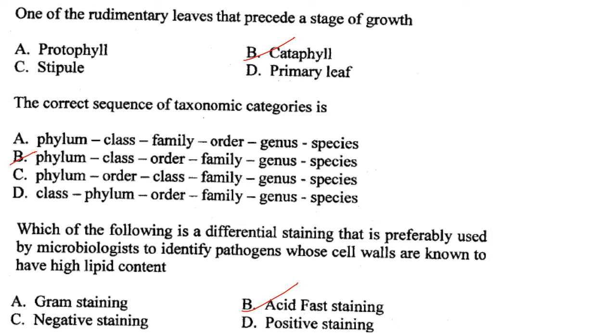The correct sequence of taxonomic categories is: phylum is divided into classes, classes into orders, orders into family, family into genus, and then species.